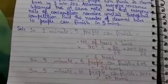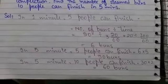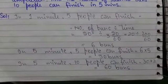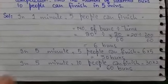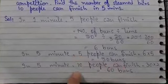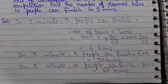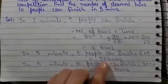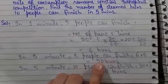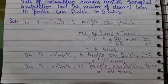Now we have to find how many buns 5 people can finish in 5 minutes. We will multiply 6 by 5. The answer will be 30 buns. In 5 minutes, 10 people can finish... As you can see, the number of people is doubled. So we will multiply 30 by 2 and the answer will be 60 buns.